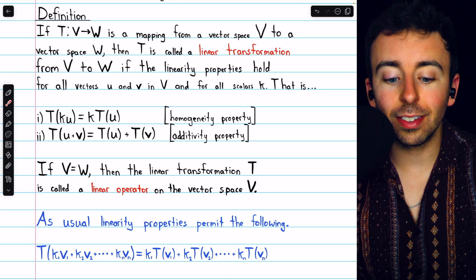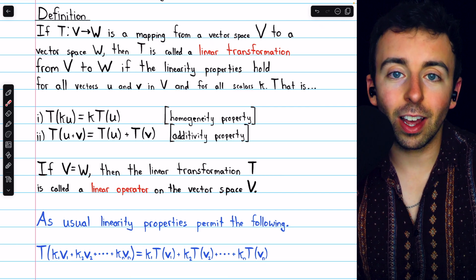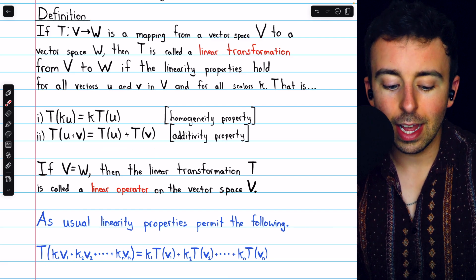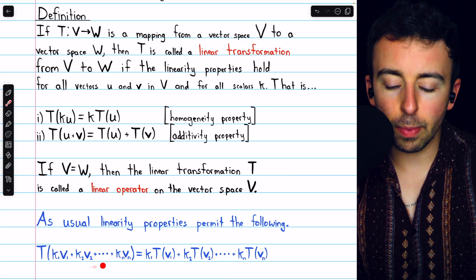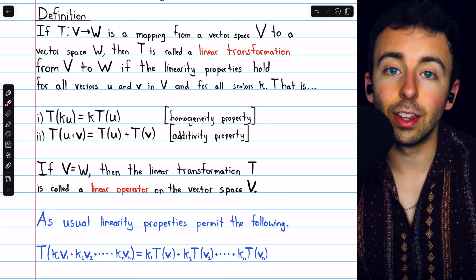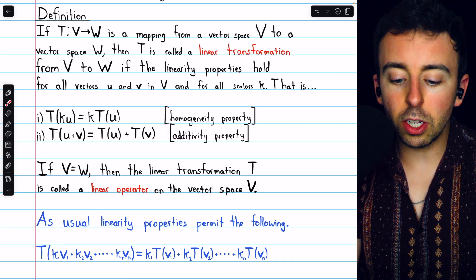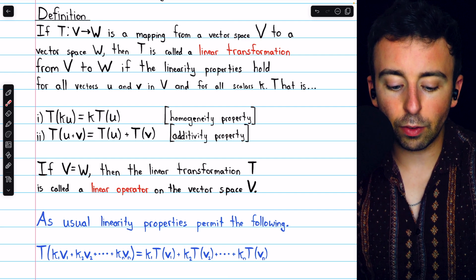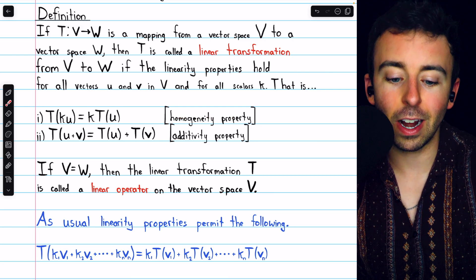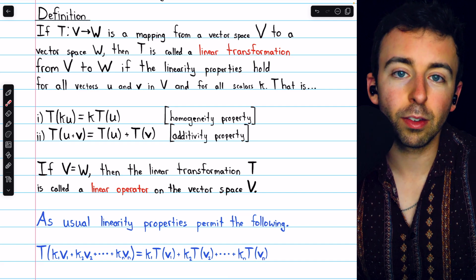Remember, the difference from what we've previously discussed is that now the domain and codomain of the transformation could be any vector space, not just Rn. These linearity properties lead to a nice property: the image of a linear combination of vectors in the domain is equal to the linear combination of the images in the codomain. We can apply the additivity property to split the transformation across the sum, and then apply the homogeneity property to each term to take the scalar out.